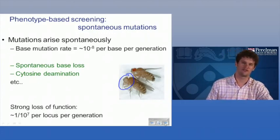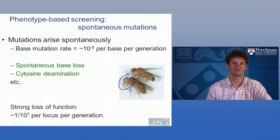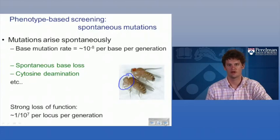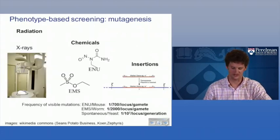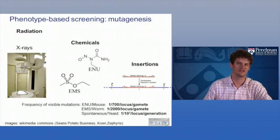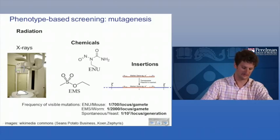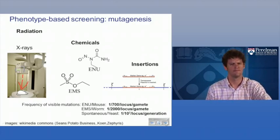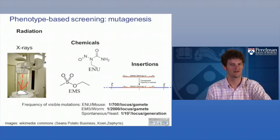On the other hand, if you're doing a genetic screen in mouse and can handle at most a few hundred individuals, you're not going to be able to rely on spontaneous mutation — you need to actively add a mutagen. The classical ways of doing this are through radiation, chemical mutagenesis, and insertional mutagenesis. With radiation, you would typically use a male mouse to get mutations in the sperm precursors, so each sperm will have a different mutation.